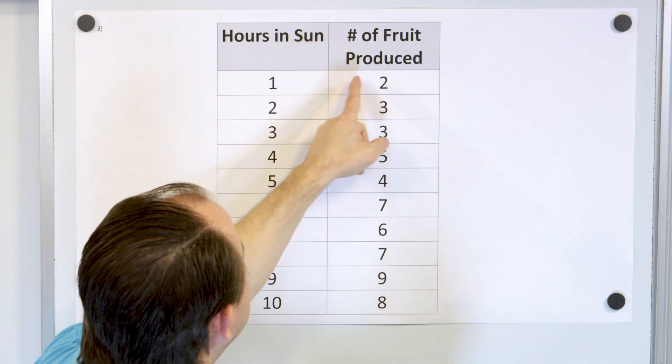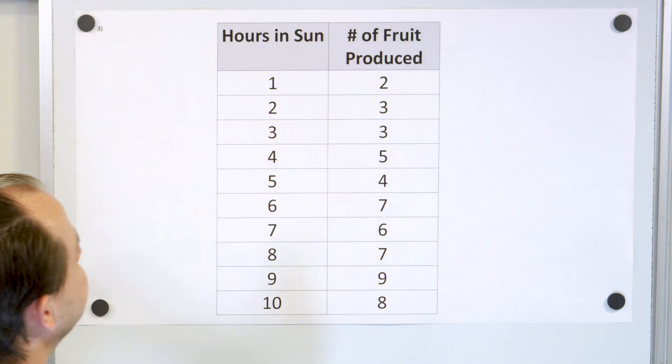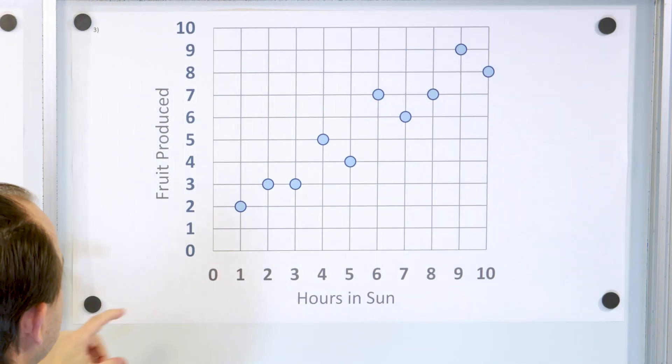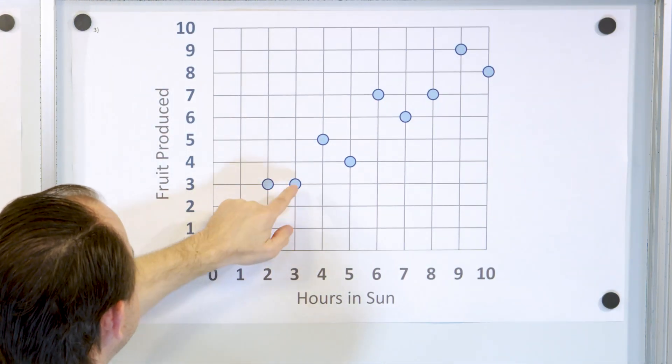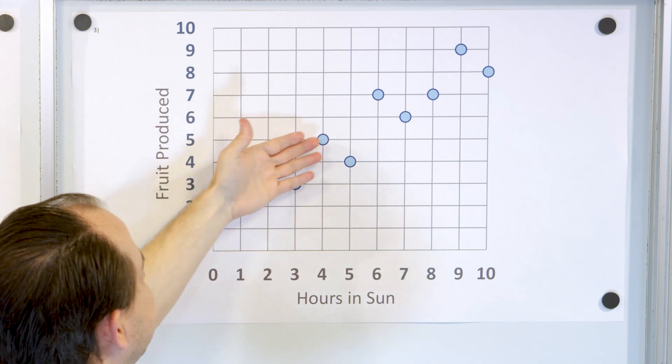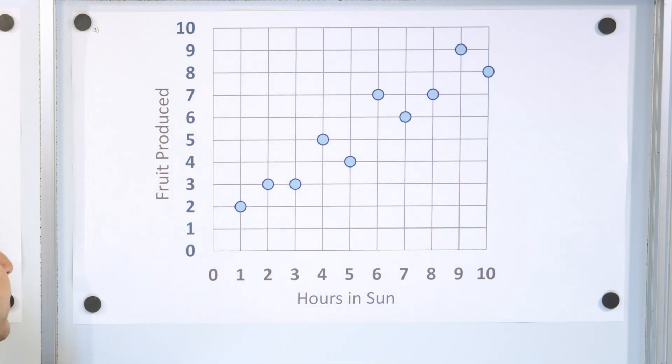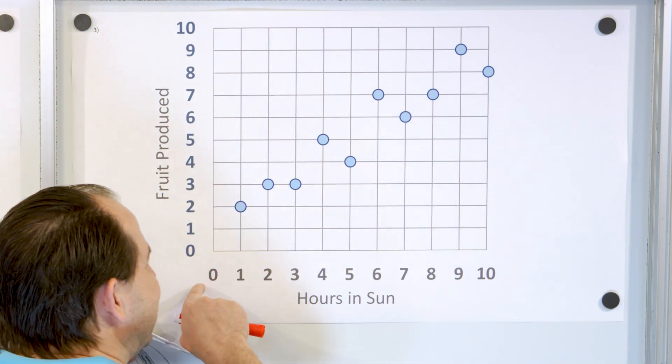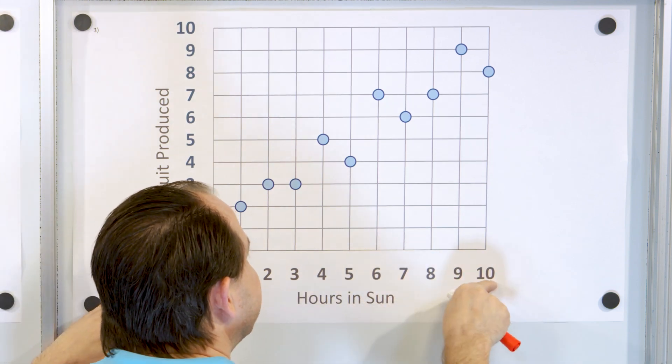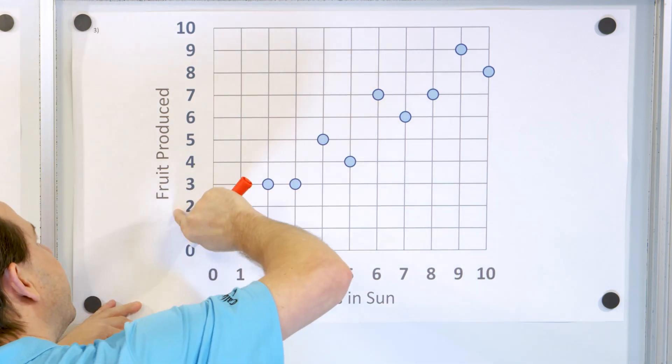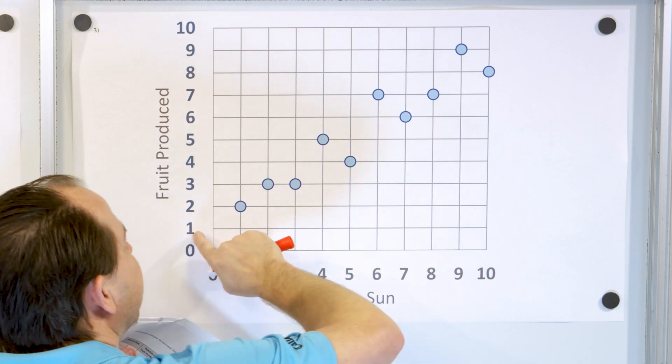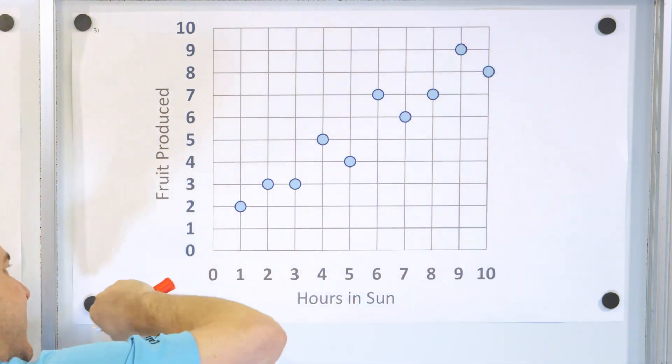So the first couple points, one comma two, two comma three, three comma three. And if you plot the rest of the points, you'll get a data set that looks like this. And it's pretty clearly correlated because we can see that as we increase the number of hours in the sun, we have a nice trend line showing that the number of fruit produced is also going up, and it's slanted up and to the right.